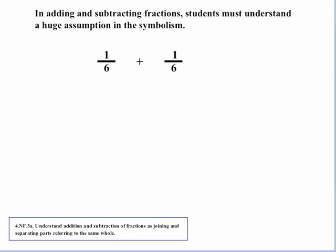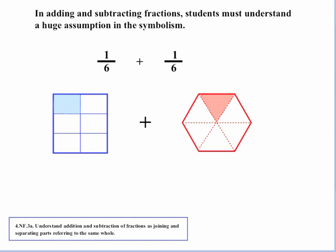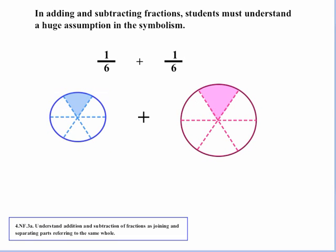In adding and subtracting fractions, students must understand a huge assumption in the symbolism, and it's actually stated in Part A — that's the idea of the same whole. For example, if we had 1/6 plus 1/6, there's no way it can work with two totally different objects and parts.